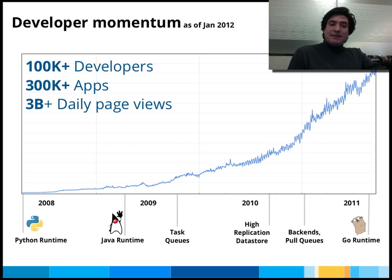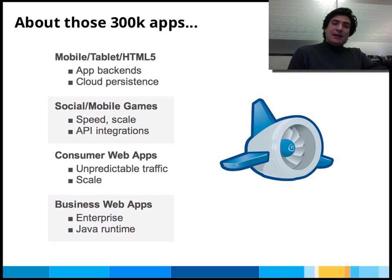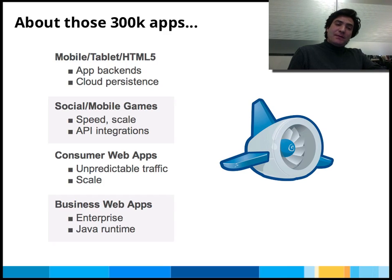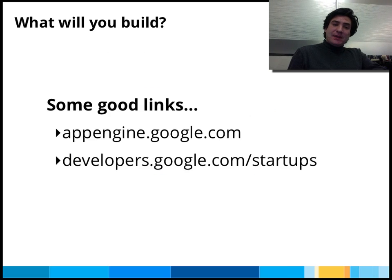There's been tremendous developer momentum. As of January this year, we have over 100,000 developers, 300,000 apps, and we serve over three billion daily page views. There are four different categories that these 300,000 apps fit into: mobile, tablet, and HTML5 apps; social mobile games; consumer web apps where you have to handle unpredictable traffic and scale; as well as business applications. So what will you build? Come visit us on appengine.google.com and let us know how it goes. Thanks.